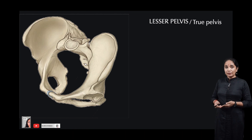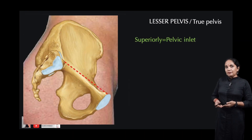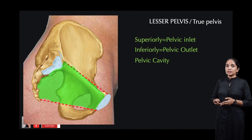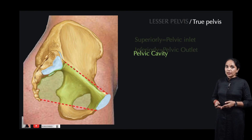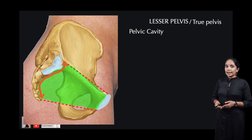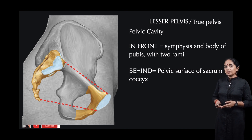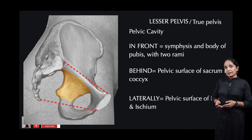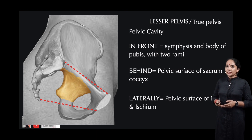Now let's look at the lesser pelvis, also called the true pelvis. The lesser pelvis is bound superiorly by the pelvic brim or the pelvic inlet, and inferiorly by the pelvic outlet. In between these two boundaries we have the pelvic cavity, which is bound by certain bony structures. Anteriorly we have the symphysis and the body as well as the two rami of the pubis; posteriorly we have the pelvic surface of the sacrum and the coccyx; on the lateral side there is a quadrangular bit of bone formed by the pelvic surface of the ilium and the ischium. This arc is completed on either side by the sacrotuberous and sacrospinous ligaments.